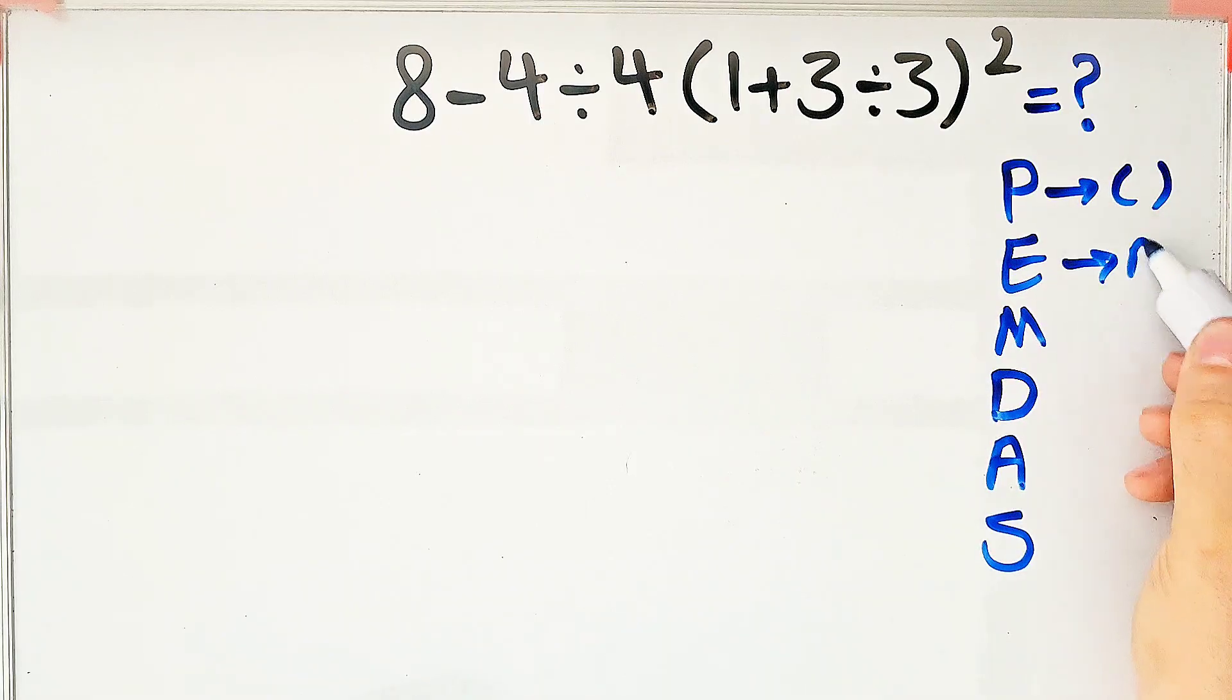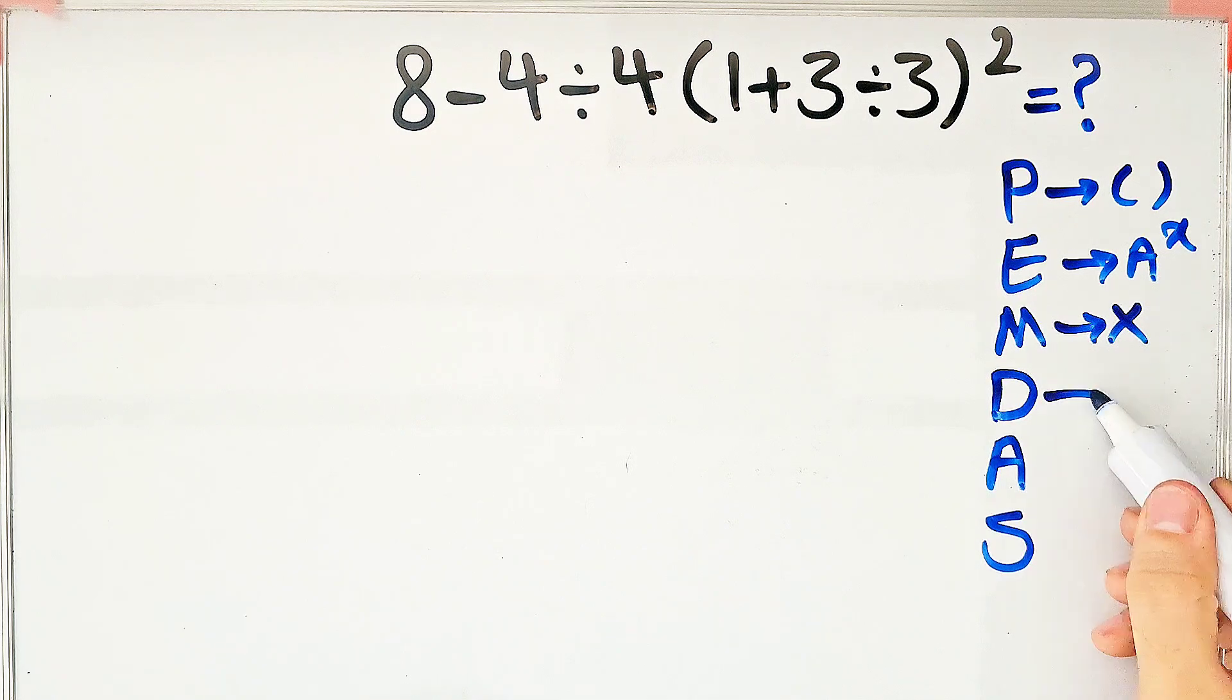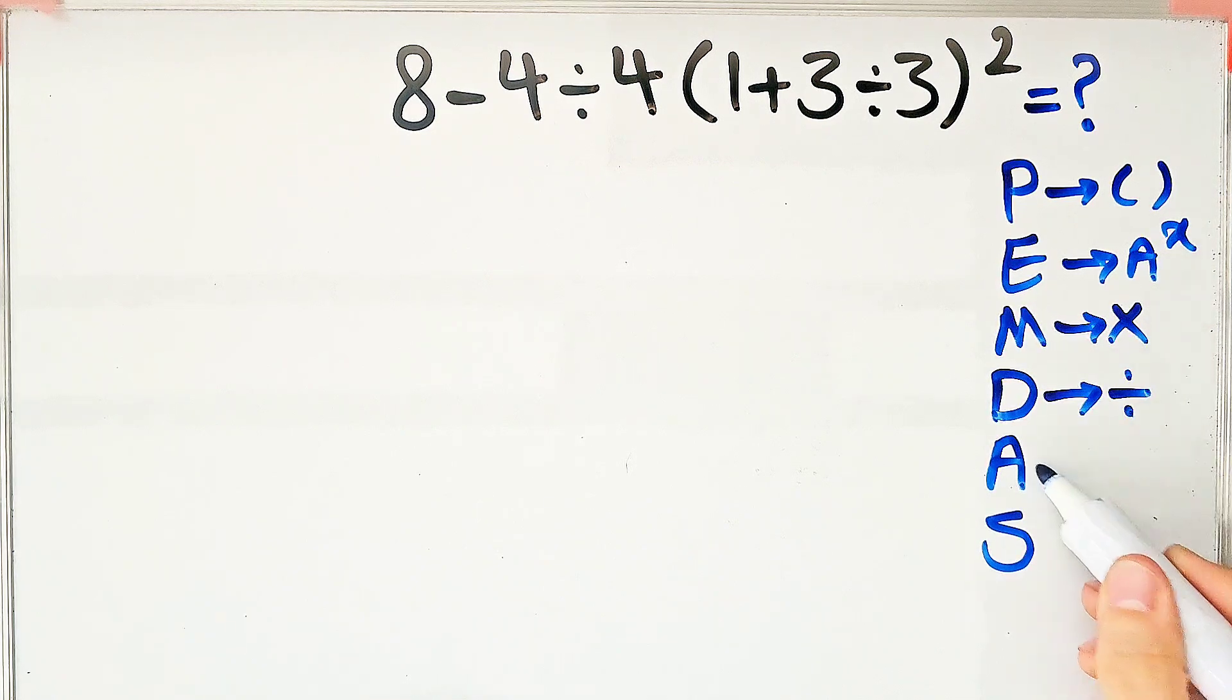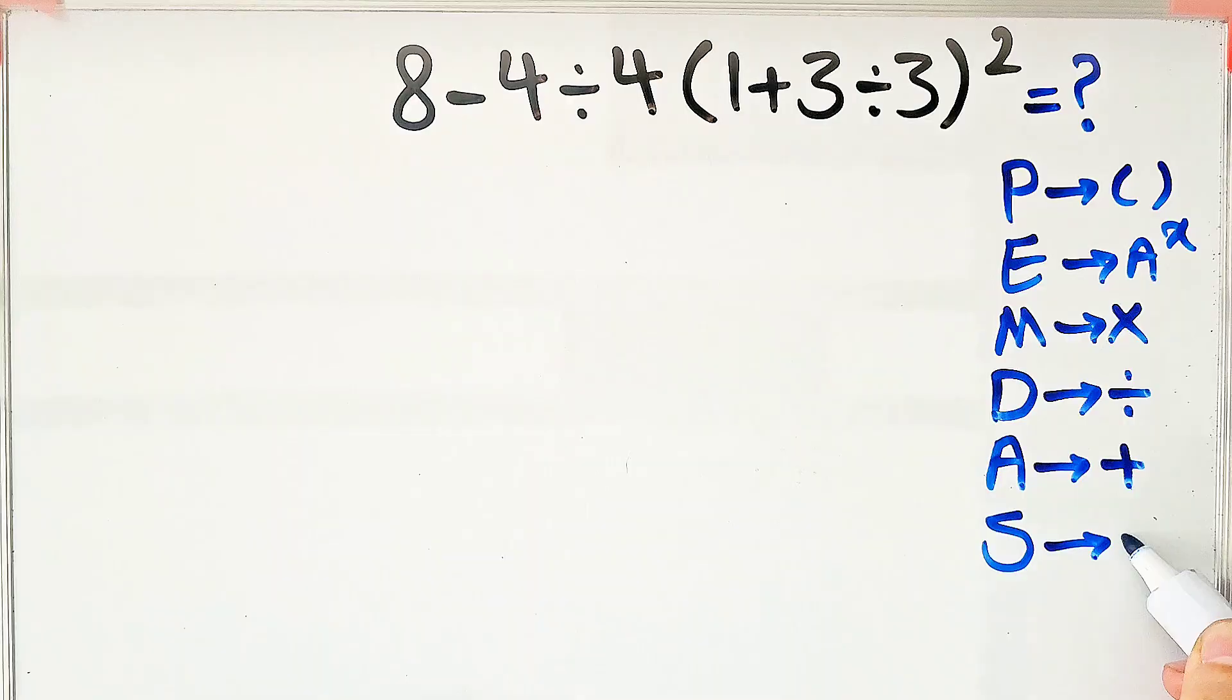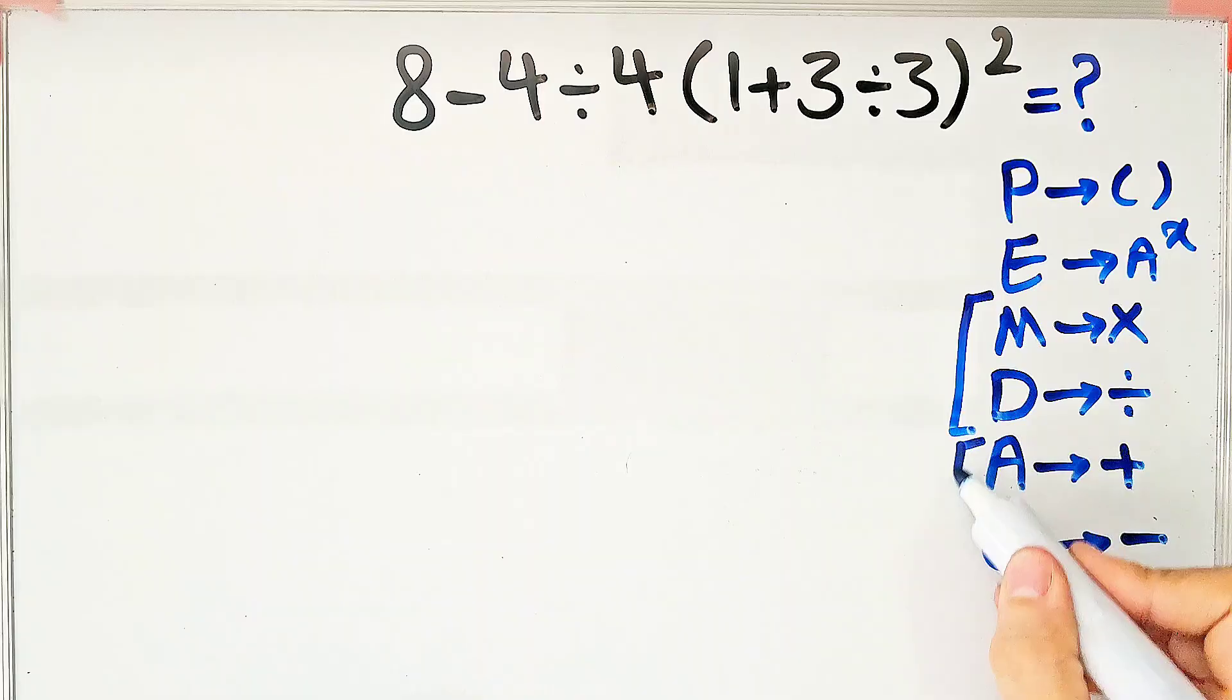P stands for parenthesis, E stands for exponent, M stands for multiplication, D stands for division, A stands for addition, and S stands for subtraction. Remember that multiplication and division have the same level of priority. Also, addition and subtraction have the same level of priority.